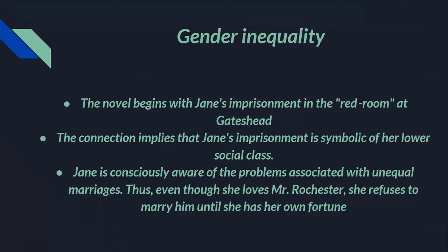Significantly, Jane is consciously aware of the problems associated with unequal marriages. Thus, even though she loves Mr. Rochester, she refuses to marry him until she has her own fortune and can enter into the marriage contract as his equal.